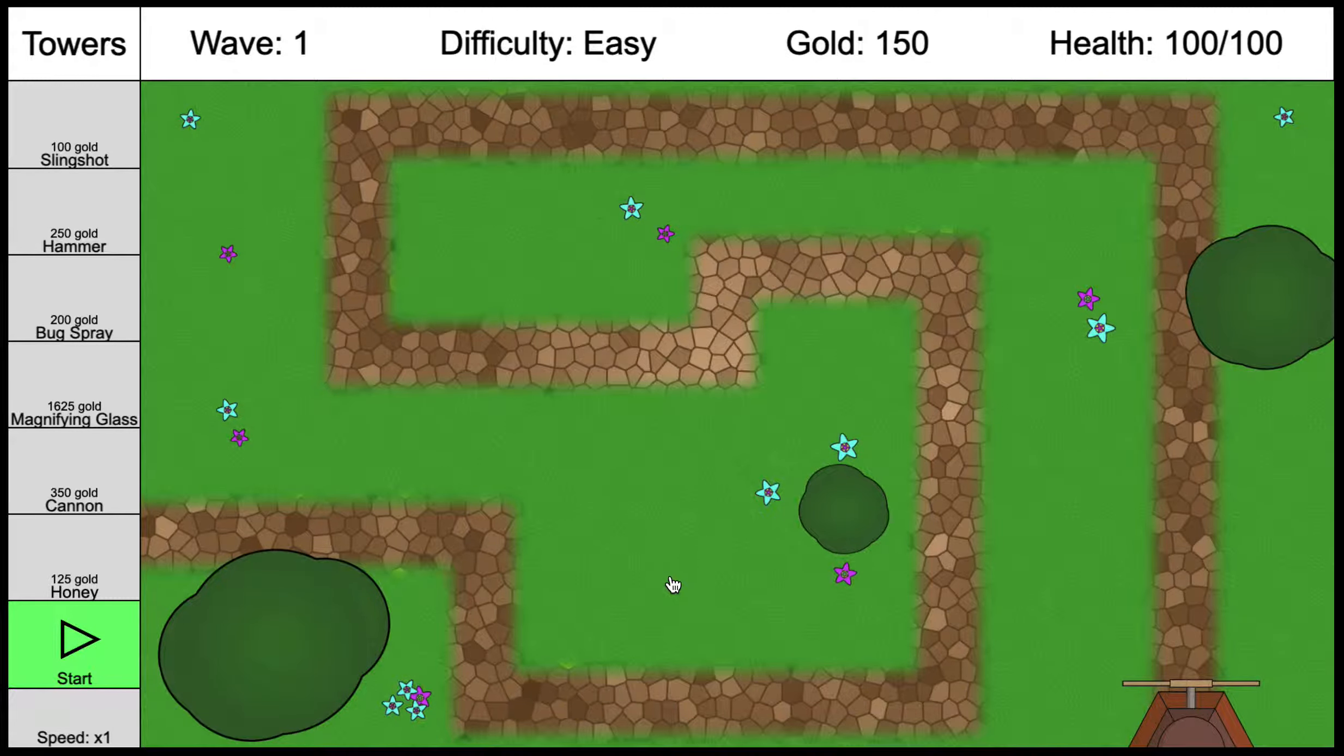This is the play area of the map. This is the path here where the ants will follow along, and that's the windmill there. Across the top, you have information that tells you what wave you're on, the difficulty you chose, the amount of gold you have, and the health of your windmill. Along the left-hand side here, you have the towers. You can click the slingshot, hammer, bug spray, magnifying glass, cannon, or honey. Clicking any of those will buy a tower, and then you can place it on the map. You can see the gold amounts are listed here as well.